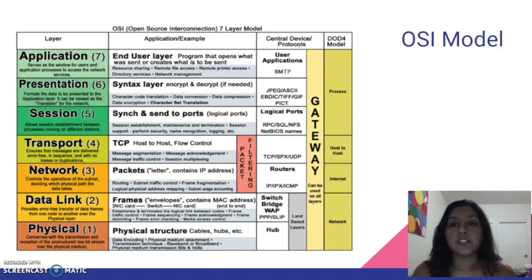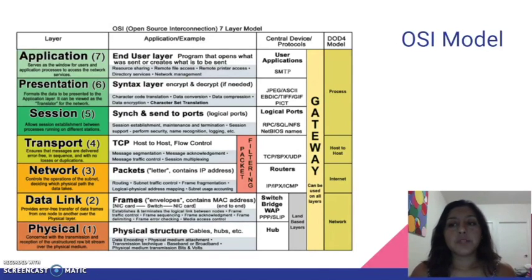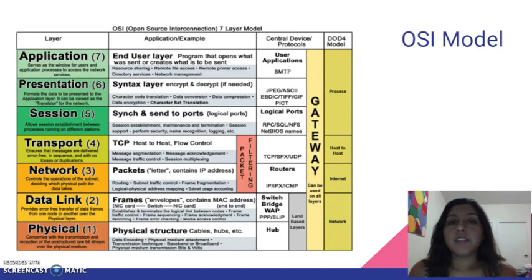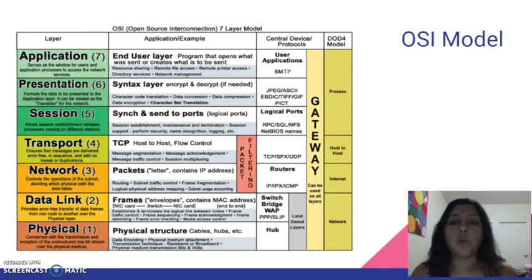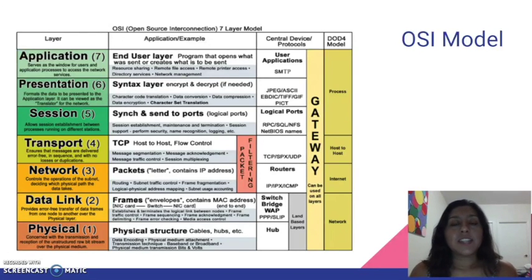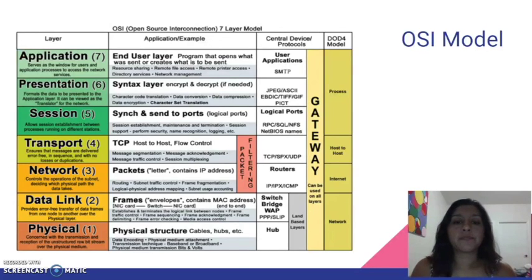The frames output are then transmitted to the physical layer. The physical layer deals with bit-level transmission between networks. Bit-level streams are the pulses of light or electricity that represent zeros and ones on the physical wire. This layer also handles voltage changes, data rates, and calculation of maximum transmission distances.